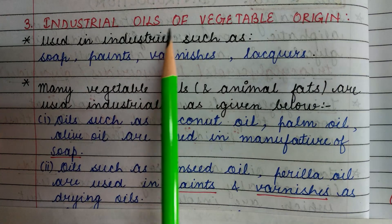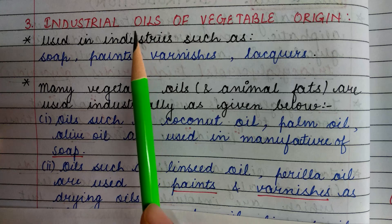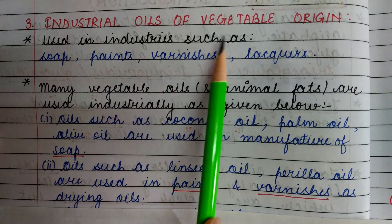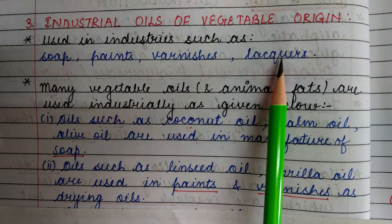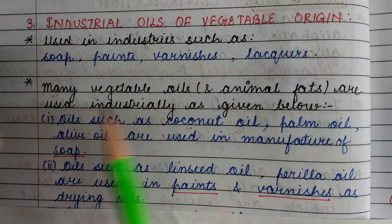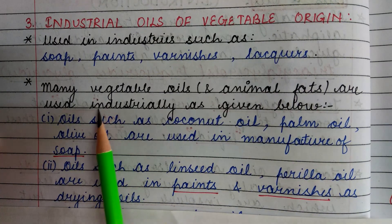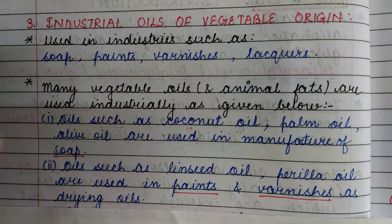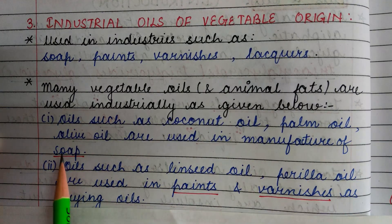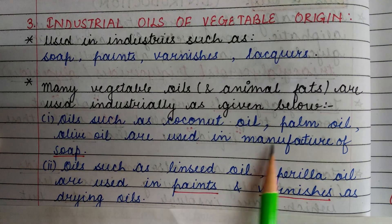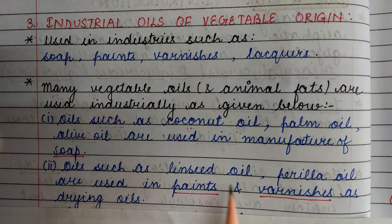Third are industrial oils of vegetable origin. Industrial oils are those which are used in industries such as soap industries, paints, varnishes, and lacquers. Many vegetable oils and animal fats are used industrially. For example, oils such as coconut oil, palm oil, and olive oil are used in the manufacture of soap.